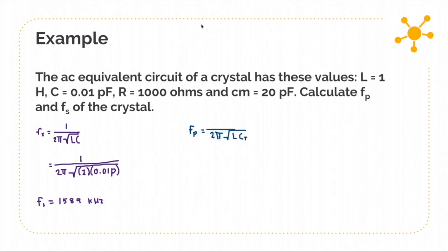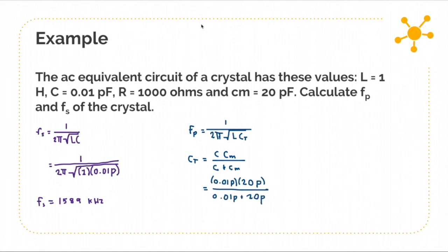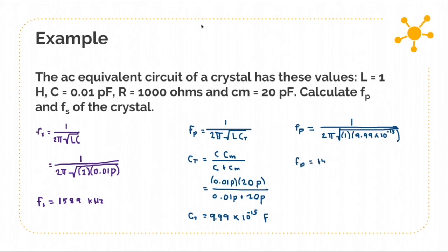Now for fp: it equals 1 over 2π times the square root of L times Ct, where Ct equals C times Cm divided by C plus Cm. Substituting the values of C and Cm, we get Ct = 9.99 × 10⁻¹⁵ farads. Substituting that into the equation for fp and solving, we get fp = 1590 kilohertz.